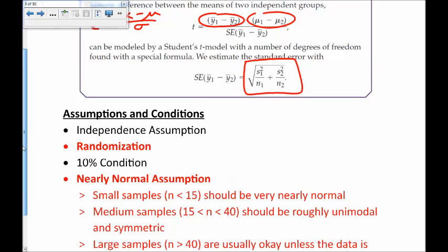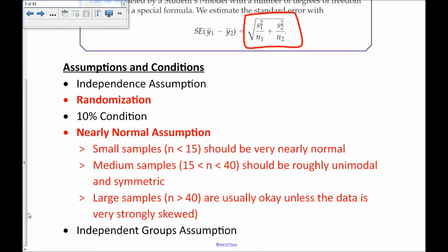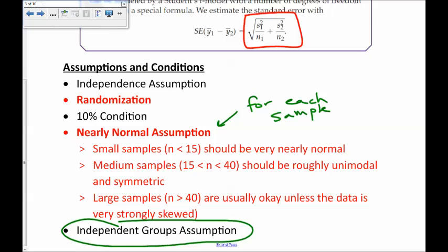The assumptions and conditions are very similar to the ones for the t-test and the t-interval. There is the independence assumption. There is randomization where the data must be collected from a random sample, and you shouldn't sample more than 10% of your population. The nearly normal assumption is still the same, where if you have very small samples, then it should be close to the normal model. If it's larger, you can be more forgiving. You should check this for each group, not just one of them. For each sample, you're checking to make sure that each one is nearly normal or large enough. Also, a new one is this independent groups assumption. The two means should come from independent groups. If they're related, that turns into something else that we'll look at actually in the next chapter.